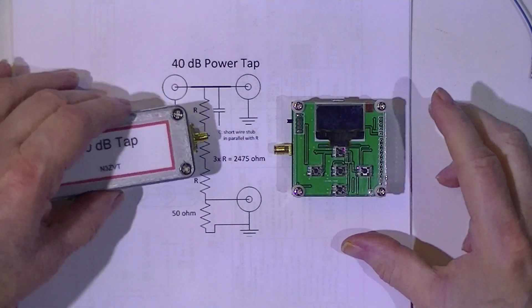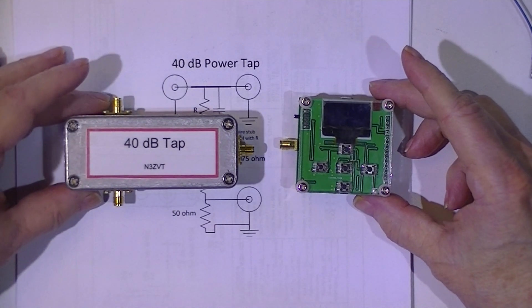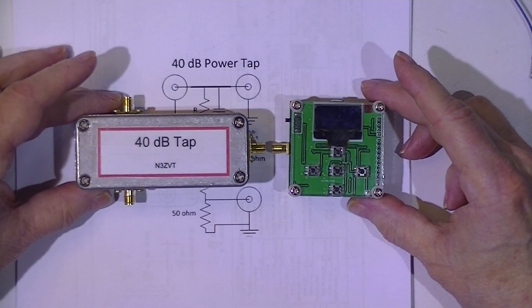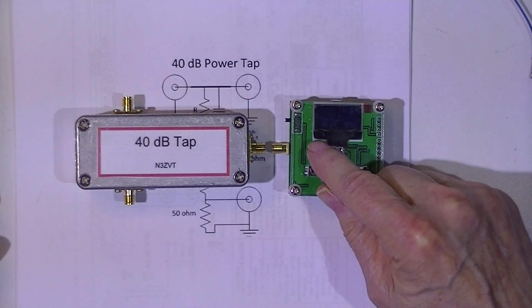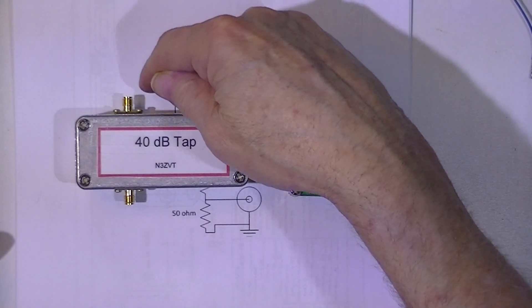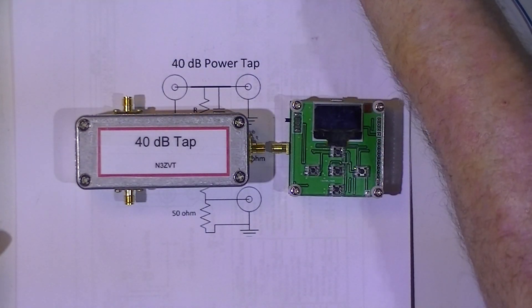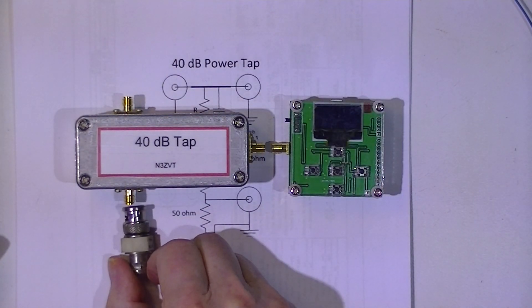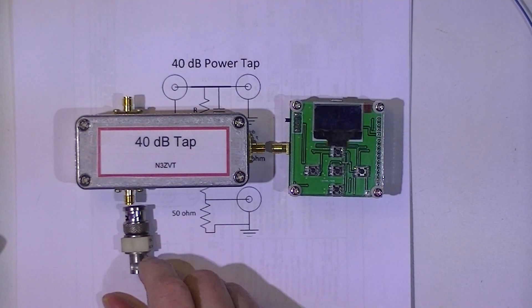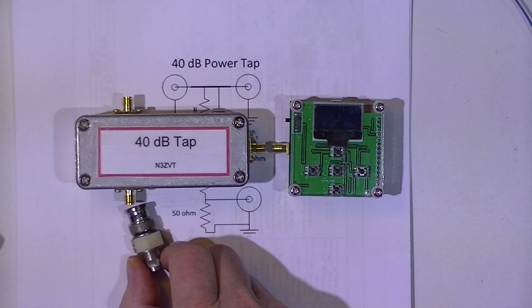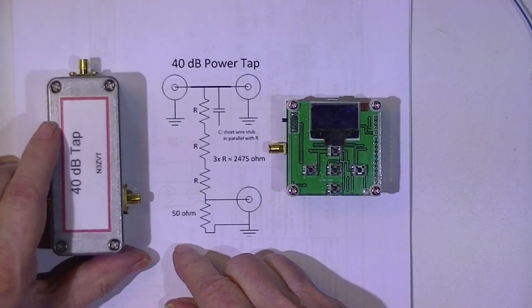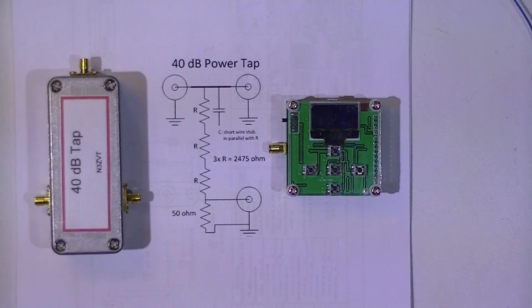Then I'll connect the tap and the wattmeter together. I'll move the signal generator over to here, and while I'm doing this, the output from the tap will be terminated in a 50 ohm termination. And I'm going to do the test at 50, 200, and 400 megahertz.